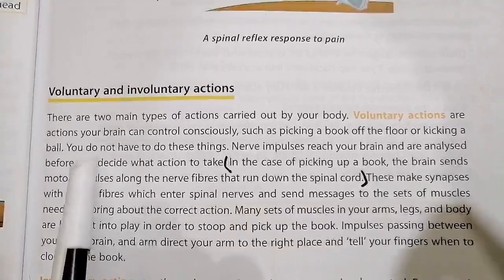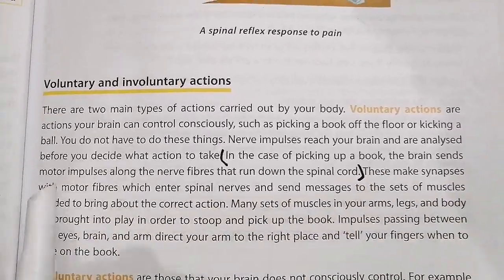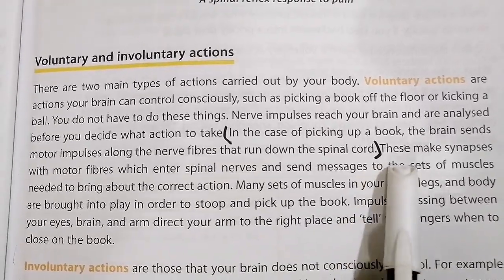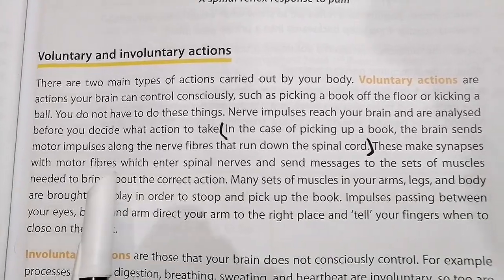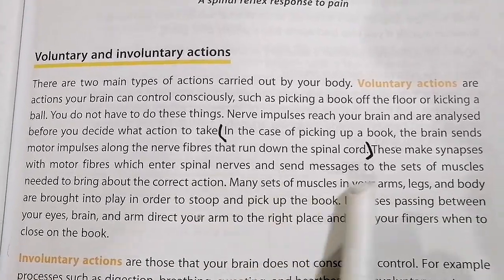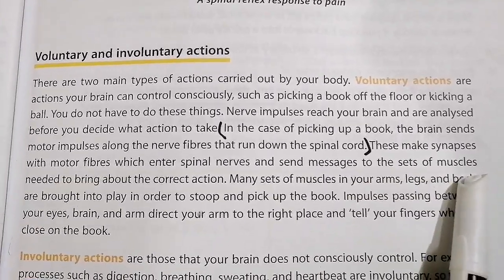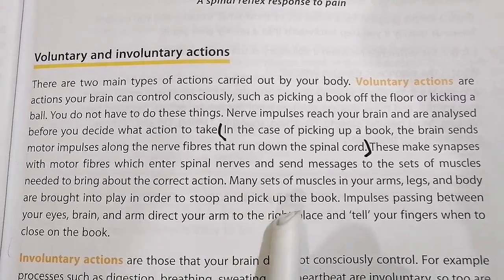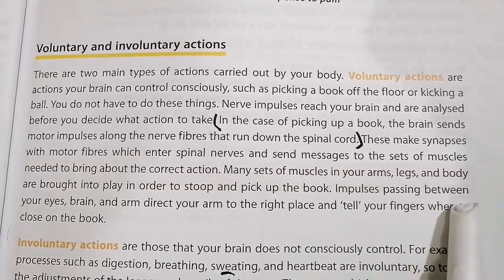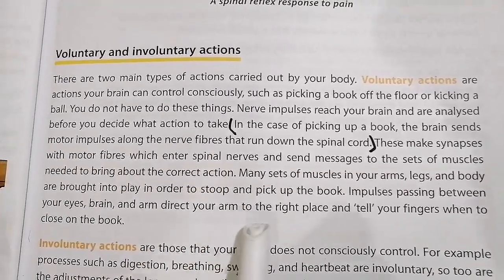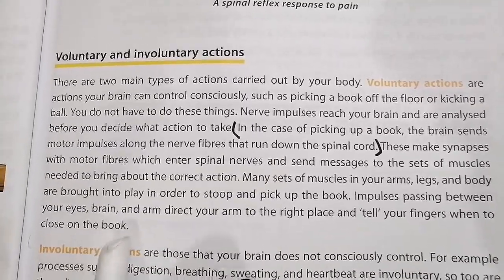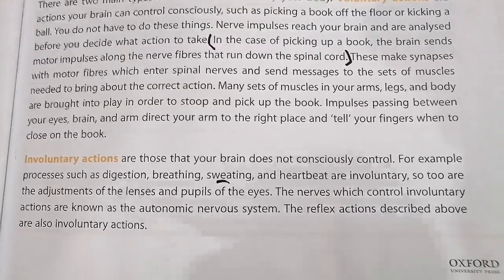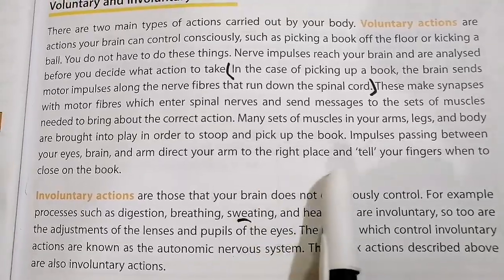This decision happens via the motor nerve. In the case of picking up a book, the brain sends motor impulses along nerve fibers running down the spinal cord. These make synapses with motor fibers that enter the spinal nerve and send the message to the muscles. The impulses passing through your eyes, brain, and arm direct your arm to the right place and tell your fingers when to close on the book.